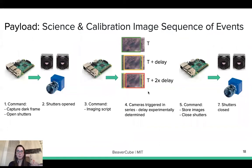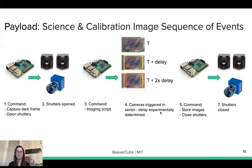The payload operates through a sequence of events. We first command a dark frame capture, then open the shutters and run the image script, which takes three images in series with a delay determined experimentally. We then close the shutter and store the images.